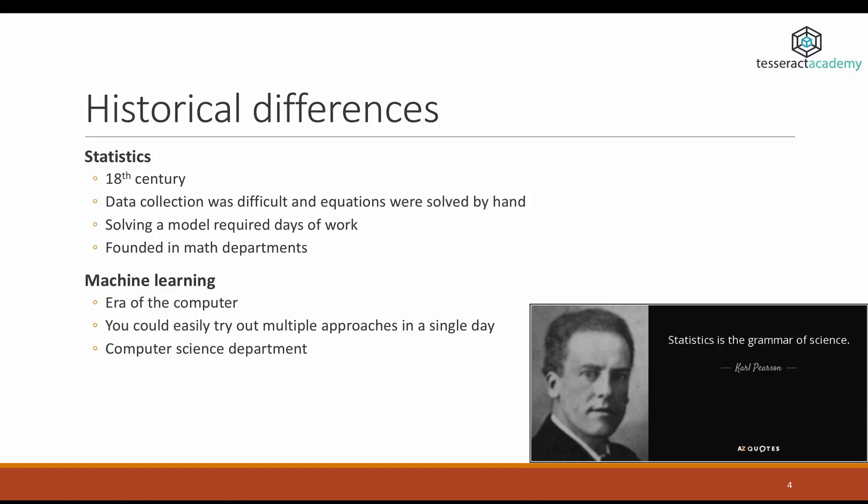It was very important to do two things back then. The first one was to extract as much information as possible from small samples. A way to do that is to make many assumptions around the distribution that your sample follows. If these assumptions are actually true, then you can extract lots of information from your data. Secondly, they also wanted to make sure that when they would create a model and go through the equations, they wouldn't have to repeat the same work twice.